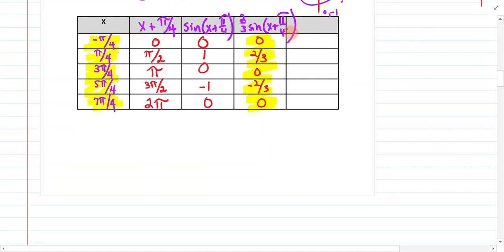Then we build our line up here, x. We start out with x, then it's x plus pi over 4. Then it's sine of x plus pi over 4. And finally it's two-thirds sine of x plus pi over 4.